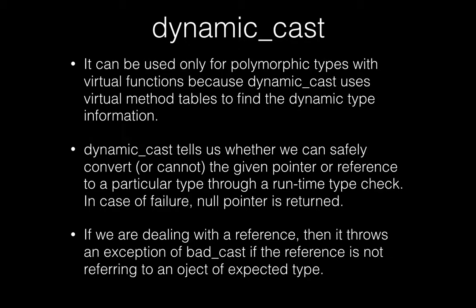Dynamic_cast basically tells us whether we can safely convert a given pointer or reference of a base class to a particular type of a derived class through a runtime type check. If the cast is successful, you get a valid pointer; otherwise you get a null pointer as the result.